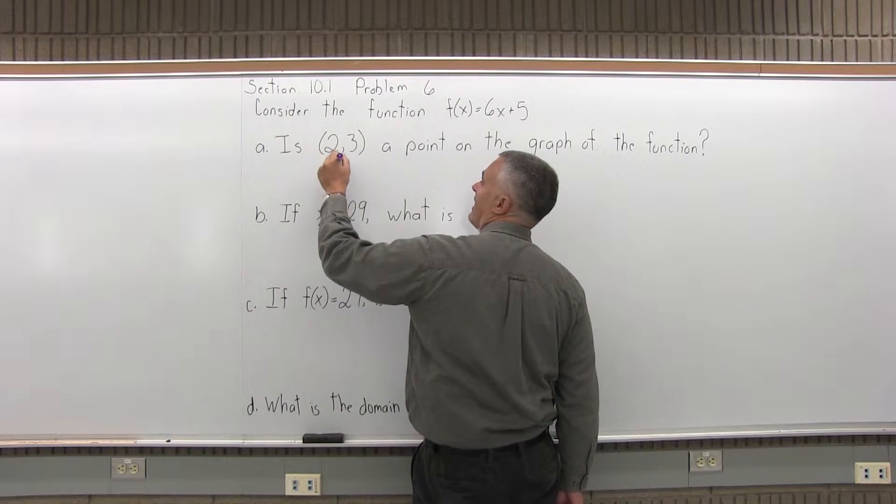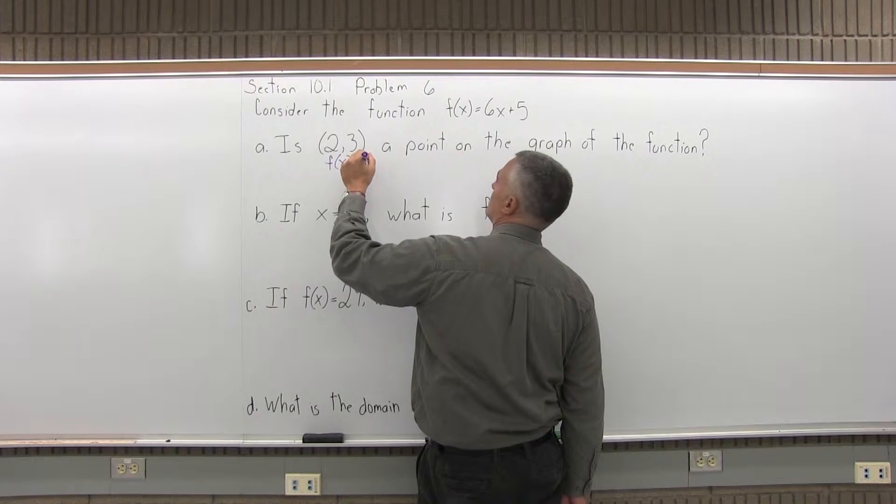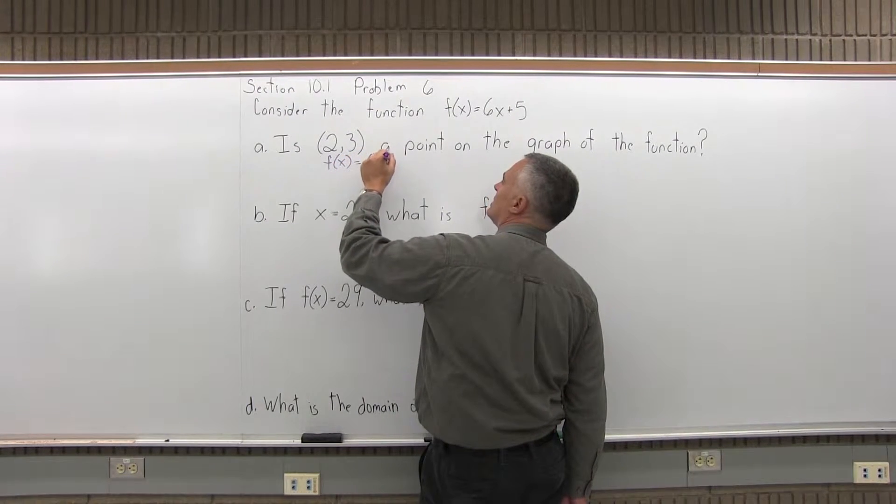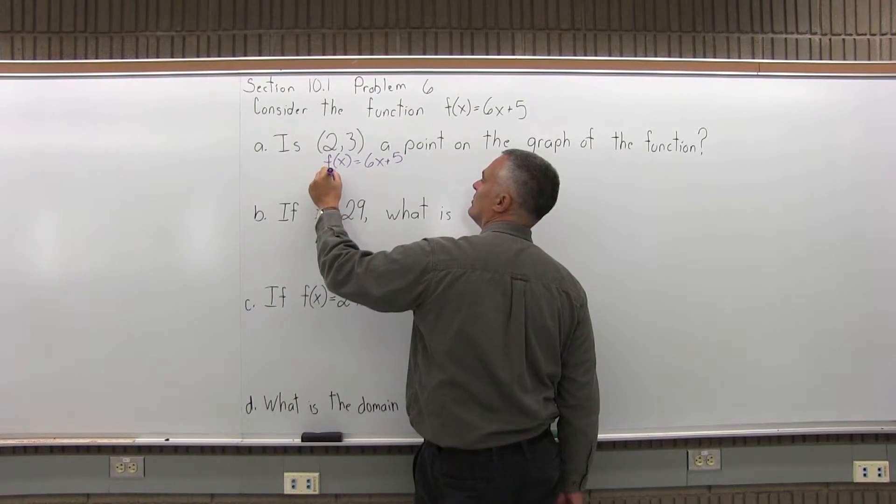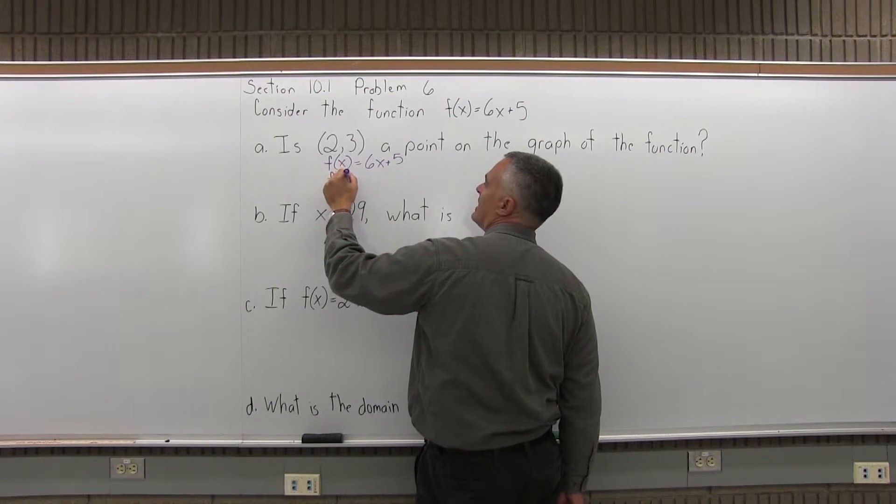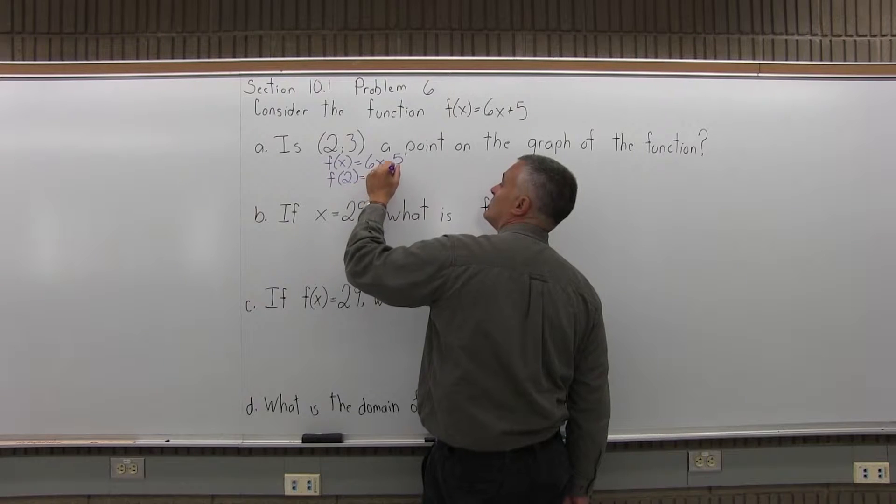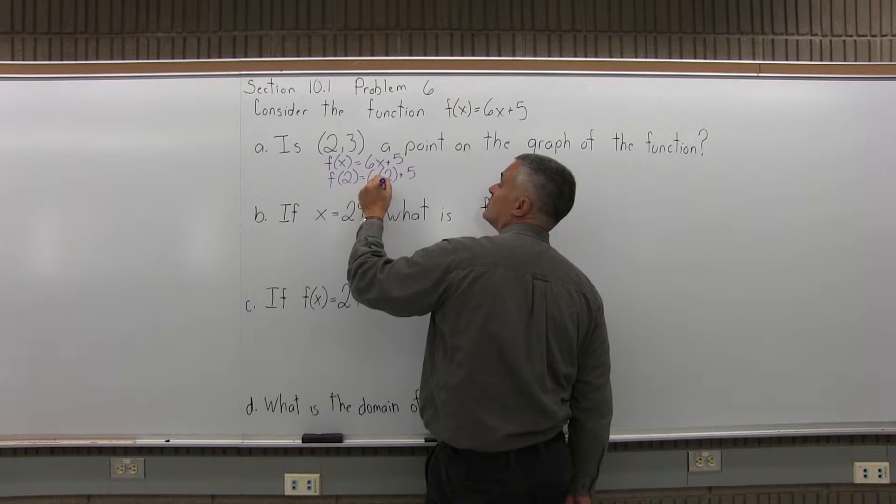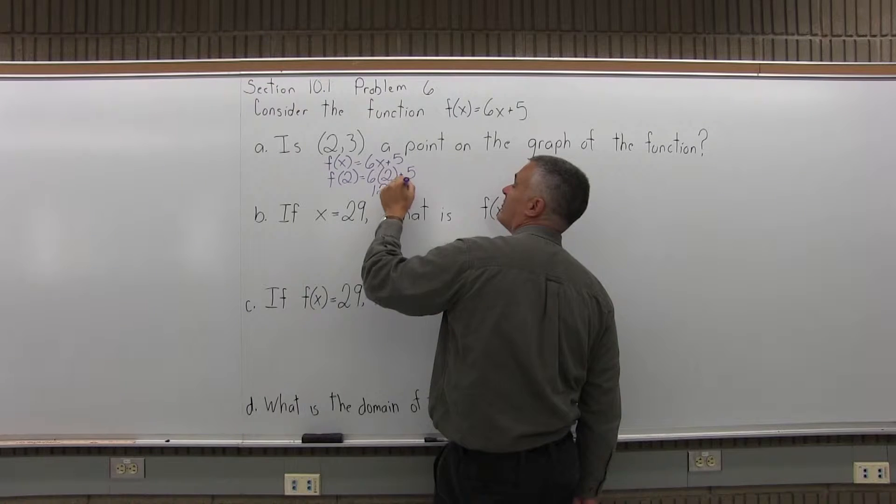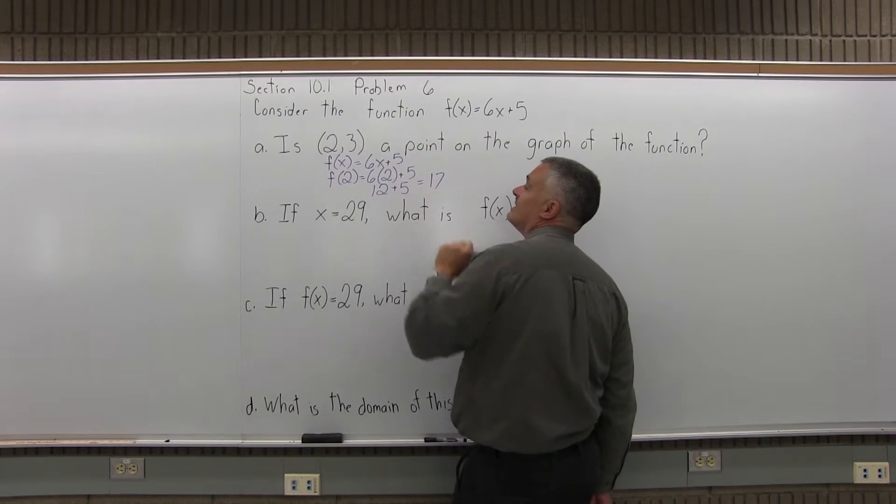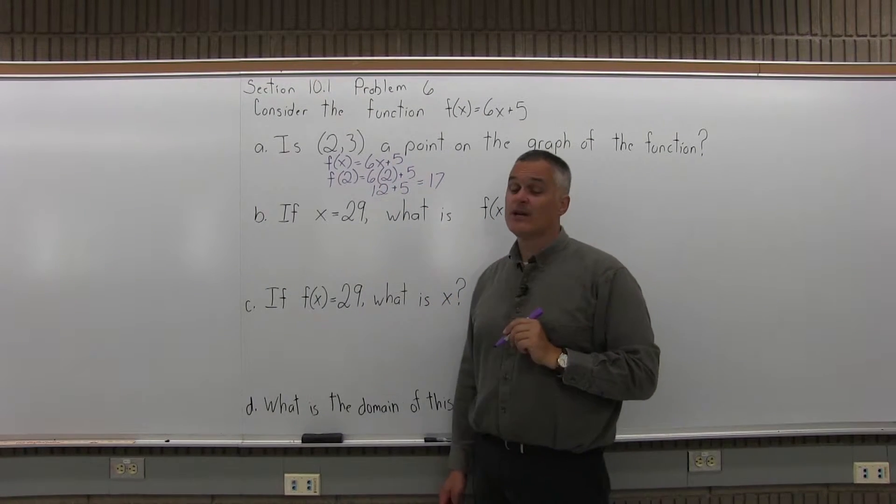So if I have f of x equals 6x plus 5, if I put in a 2, what happens is f of 2 is 6 times 2 plus 5. 6 times 2 is 12, 12 plus 5 more is 17. So if I put in a 2, I get out a 17.